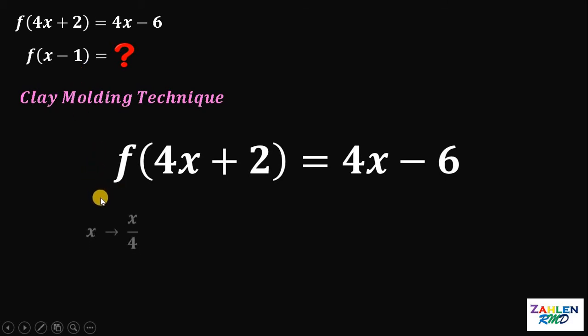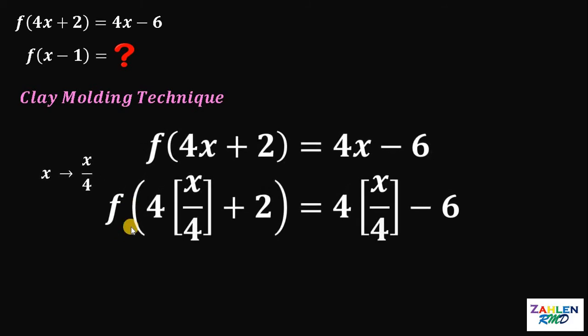Why x over 4? The reason is to cancel out this 4. For this step, we need to replace all x with x over 4. If we do that, we get f of 4 times x over 4 plus 2 equals 4 times x over 4 minus 6, wherein all x becomes x over 4.